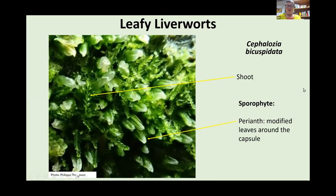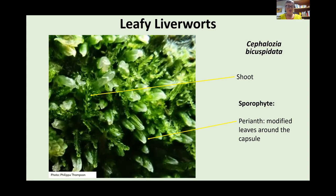Moving on to the way they reproduce. Here we have a picture of a very small liverwort called Cephalozia bicuspidata. The inflated structures poking out are the perianths — modified leaves that envelop the female egg and the developing capsule. In this species the perianths and capsule are so much bigger than the main shoots — the leaves and stem are tiny, but the actual perianth is almost the size of a whole shoot, which is a really interesting peculiarity.